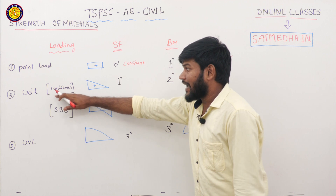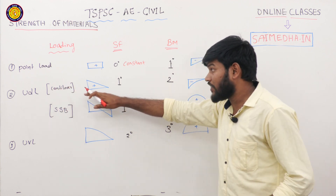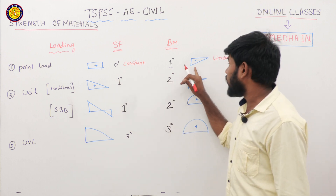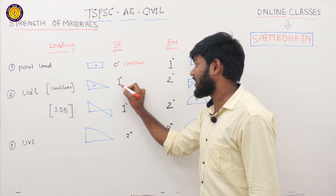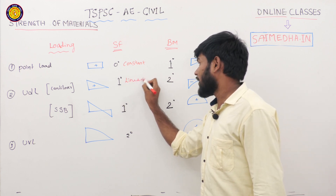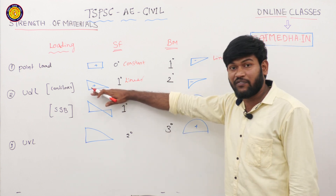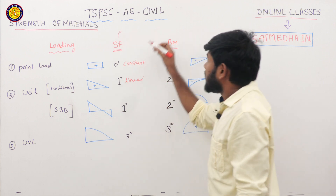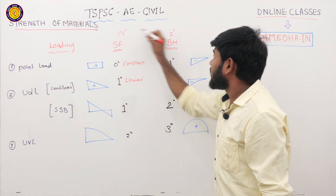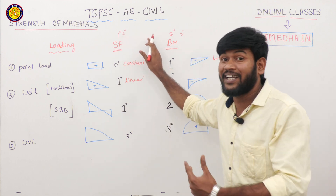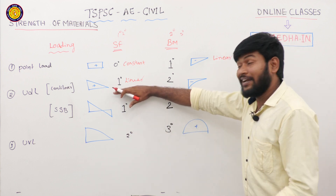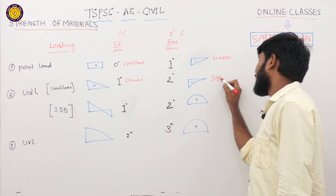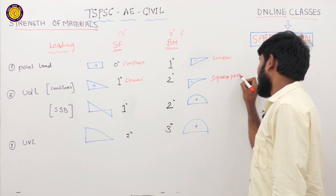Coming to the UDL case on a cantilever beam: with UDL acting on a cantilever, the shear force diagram is triangular — 1 degree, meaning linear. Since shear force is 1 degree, the bending moment is 2 degree — a square parabola, or simply a parabola.